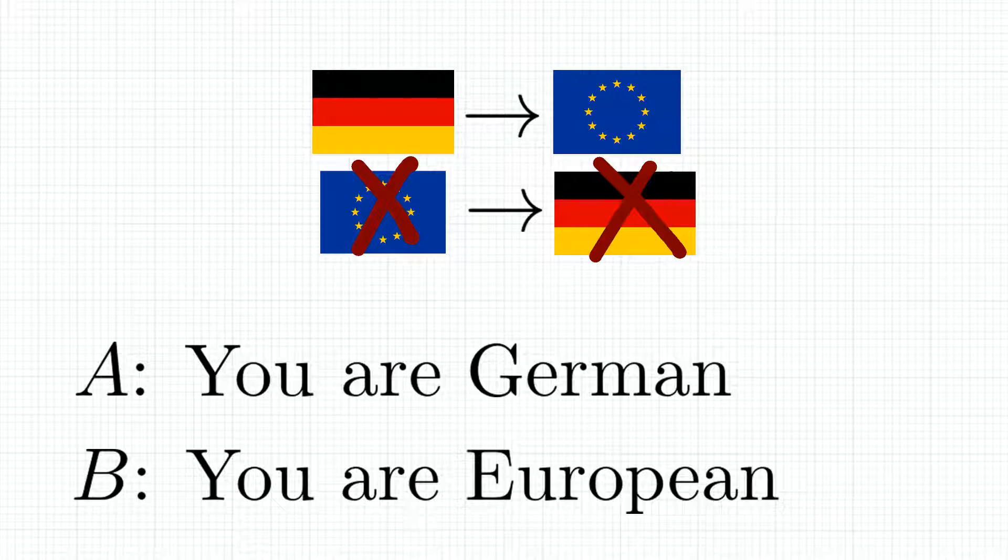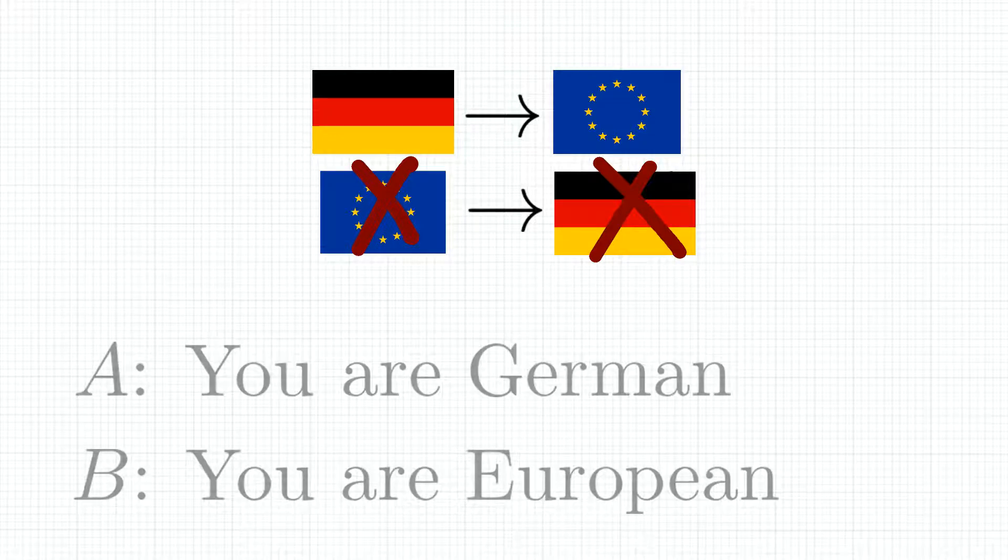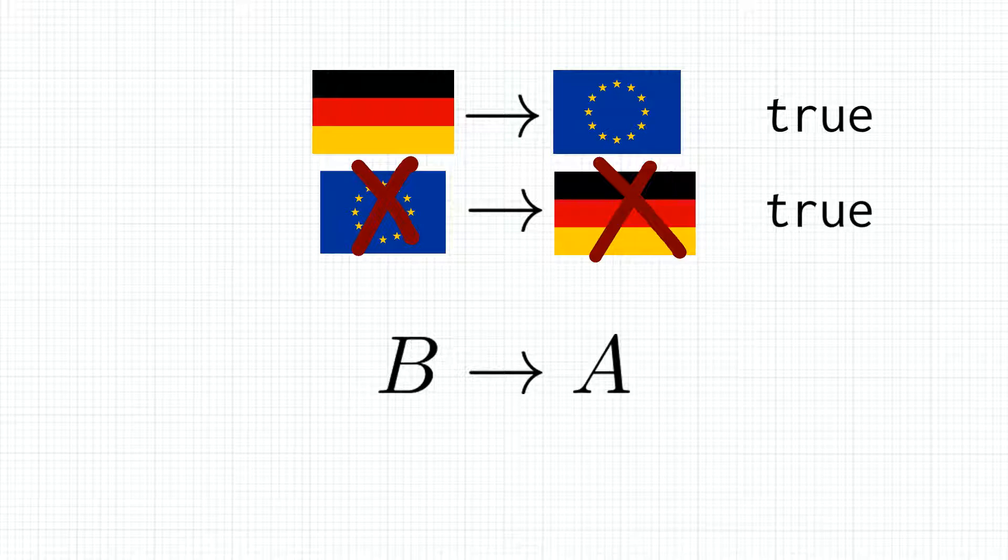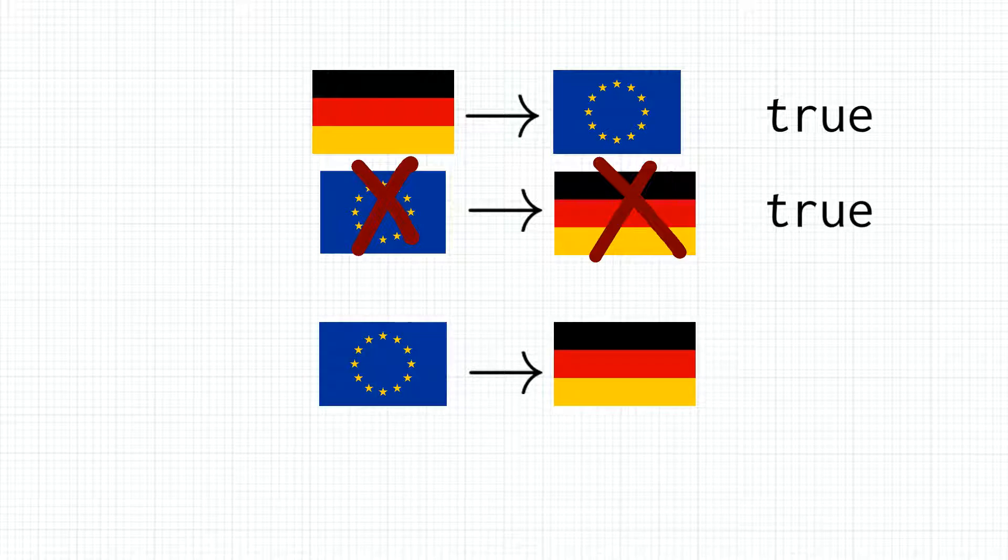Note that this real-world example can also protect us against logical fallacies. For example, the statement B leads to A, or equivalently, if you are European, then you are German, is wrong as there are other countries in Europe.